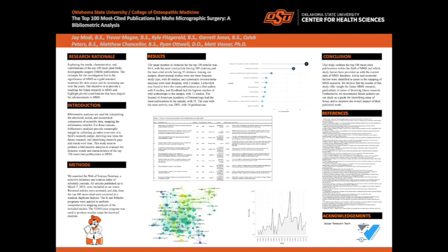In conclusion of our study, we outlined the top 100 most cited publications within the field of Mohs micrographic surgery, in which study factors have provided us with the current state of literature on this topic. Social and economic factors were identified to assist in the mapping of MMS research. We believe that the results of this study offer insight for future Mohs research, particularly in terms of directing the future of this research. Furthermore, we recommend future authors use our study as a guide for identifying areas of focus and to improve the overall impact and quality of their published works.